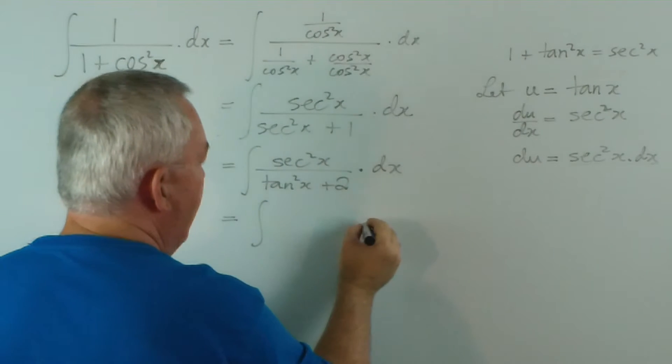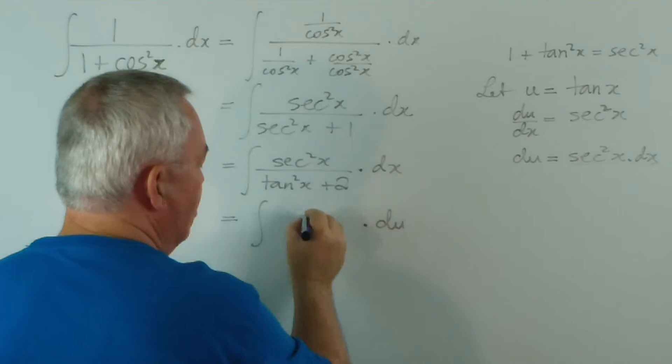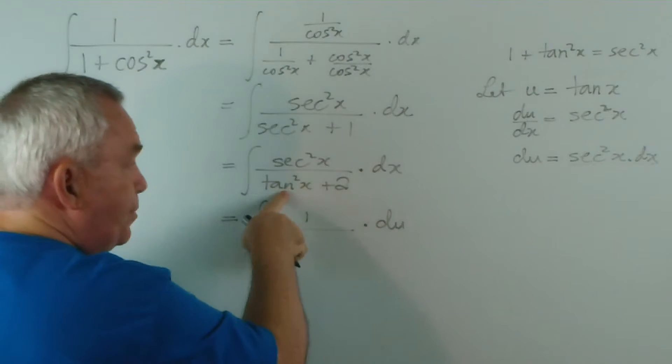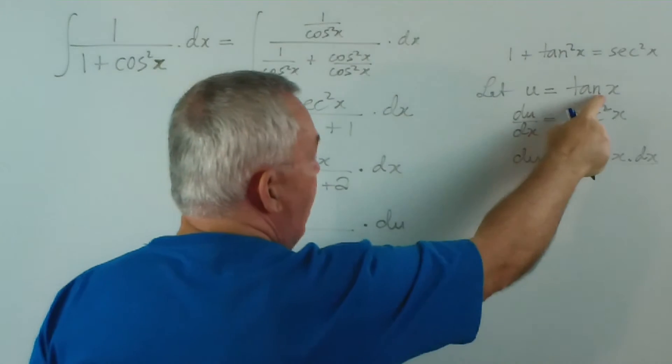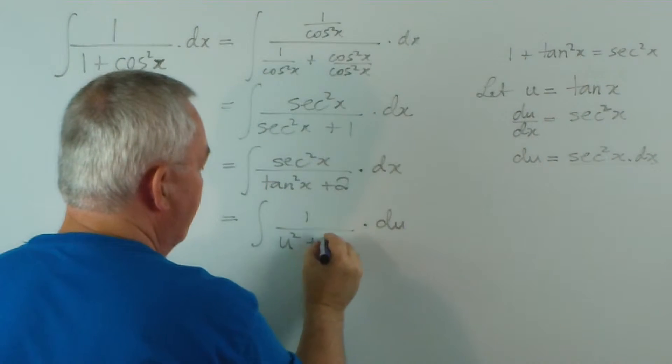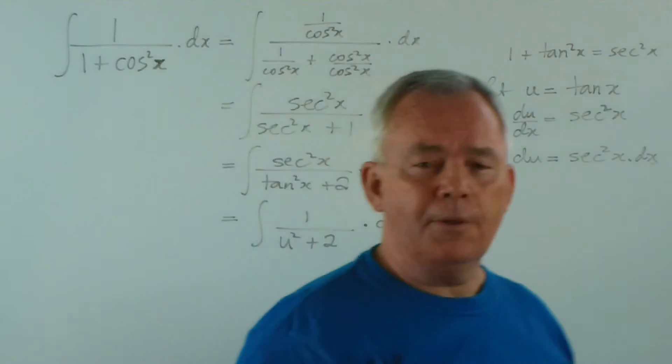So substituting, I can get du, I'll just put a 1 in there, and on the bottom, because tan x is equal to u, then tan squared x will be u squared. There we go.